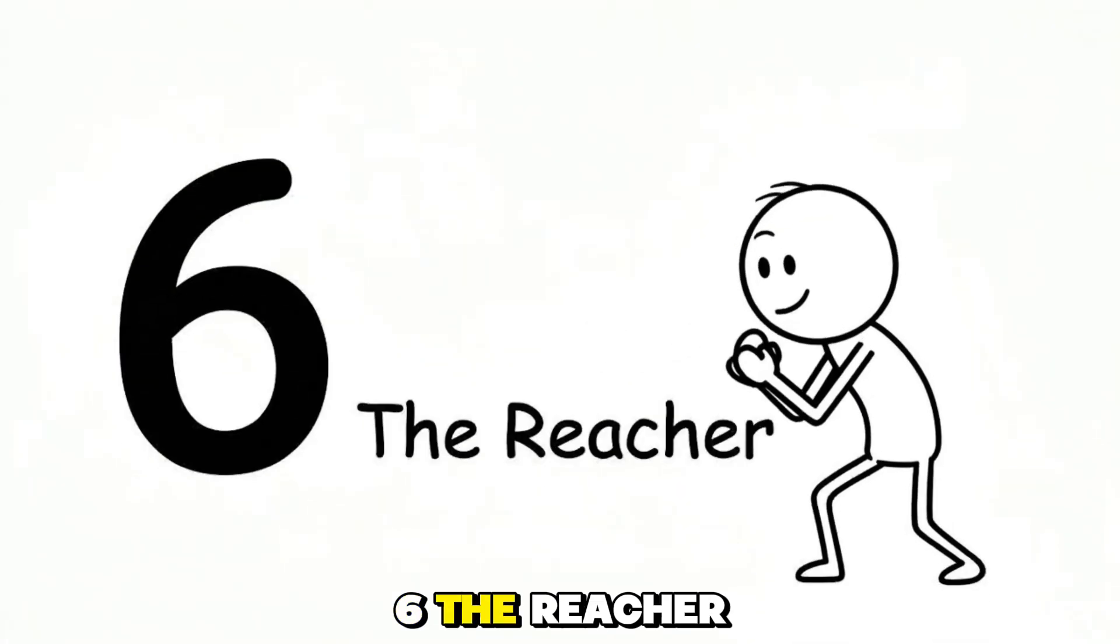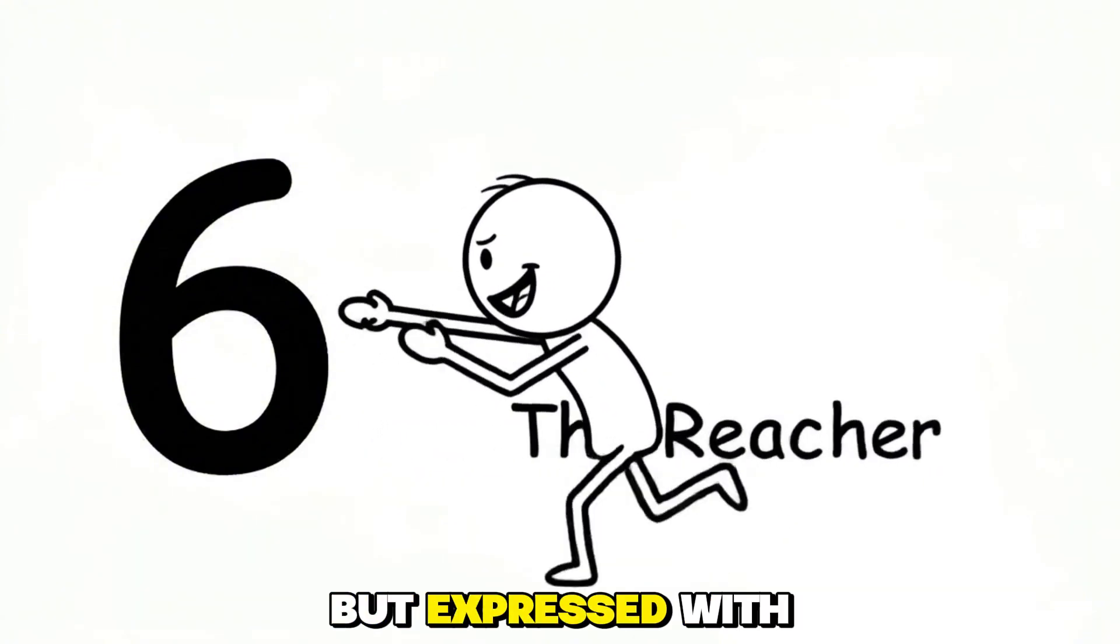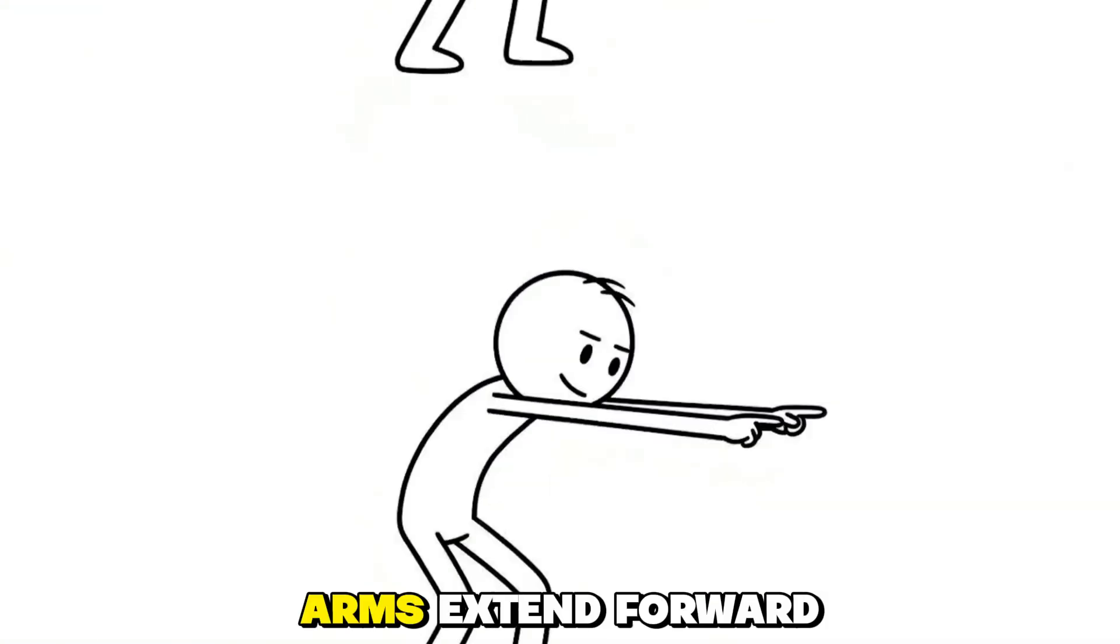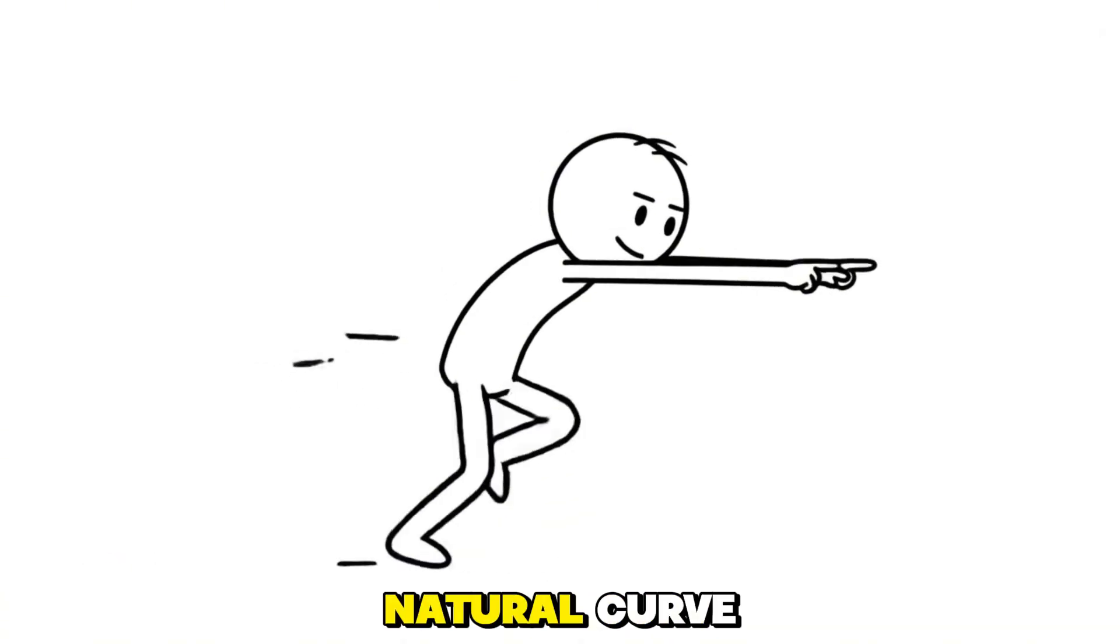The Reacher, the active dreamer. The Reacher is a variation of side sleeping, but expressed with more movement and emotion. Arms extend forward, the torso leans slightly, and the legs bend into a natural curve.